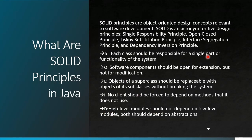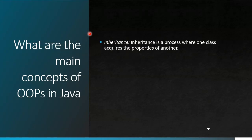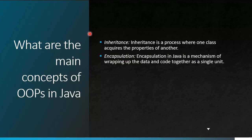The next question is: what are OOP concepts? I usually go with four things: abstraction, encapsulation, polymorphism, and inheritance. There are association, composition, and aggregation as well, but mostly I go with these four. Inheritance is a process where one class acquires the properties of another. Encapsulation in Java is the mechanism of wrapping data and code together as a single unit.